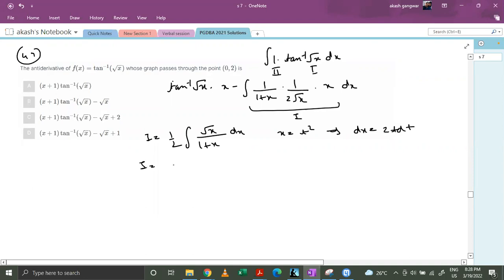So i becomes 1 by 2, this is t times 2t dt upon 1 plus t square. This becomes integral of 1 plus t square upon 1 plus t square dt minus dt upon 1 plus t square.